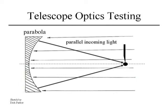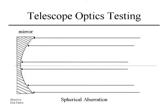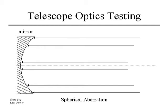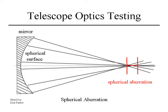Suppose we have parallel light coming in and instead of hitting a parabolic surface, it hits a spherical surface. A spherical surface is a little too curved at the edges and too flat in the center. Light striking the edge of the mirror focuses closer to the mirror than light reflecting from the center. So now we don't have a good focus — a spherical surface will not focus light from an infinite source into a single unique focus. The light has to originate at the center of curvature to get a unique focus with a sphere. This aberration to the wavefront is called spherical aberration.